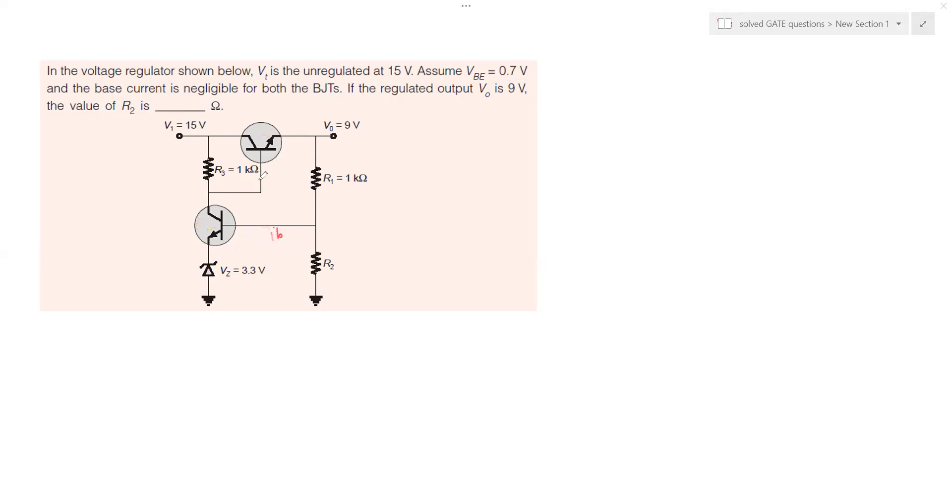The current that flows through the base pin of this transistor is assumed to be 0. Now, they say if the regulated output voltage V0 is 9 volt. Here is 9 volt. We have to find the value of R2 and R2 is given right here.